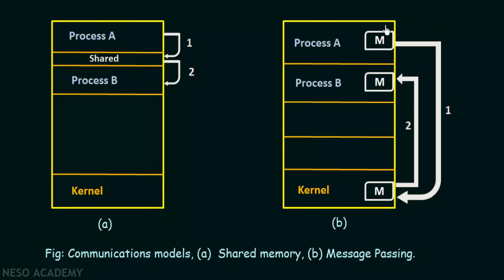In figure B, the message passing communication model, we again have process A and process B trying to communicate, along with the kernel and messages denoted by M. When process A wants to communicate to process B, it creates a message which goes to the kernel. The kernel knows that this message is for process B and sends it to process B. That is the flow — process A sends the message to the kernel and the kernel sends it to process B, allowing process A to communicate to process B via message passing.